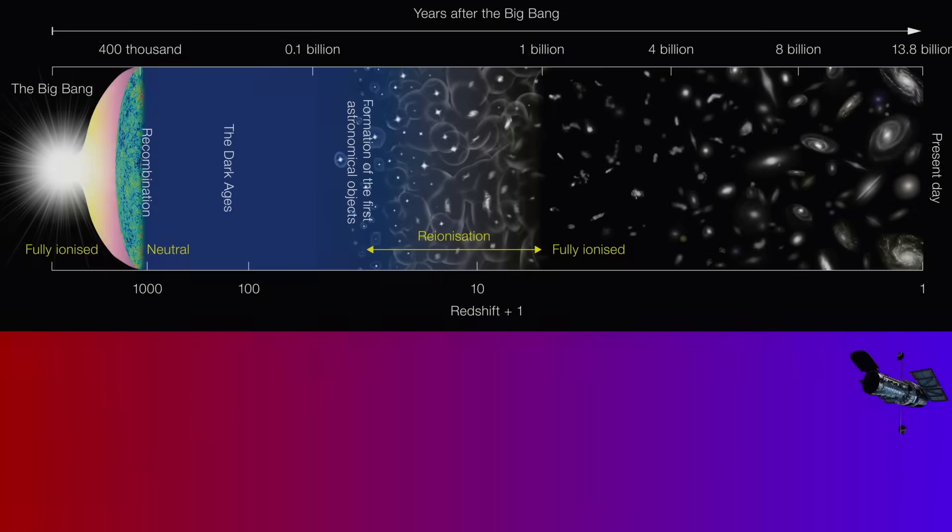For decades, Hubble pushed the frontier of the observable universe inch by inch. First a redshift of six, then eight, and finally eleven, galaxies just 400 million years after the Big Bang. Each step took years of deeper exposures, analysis, and debate.